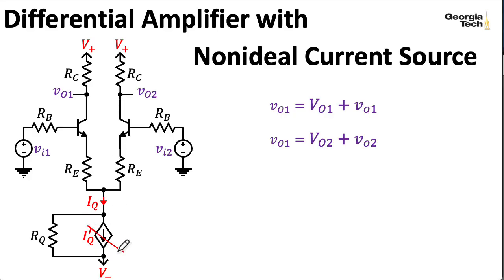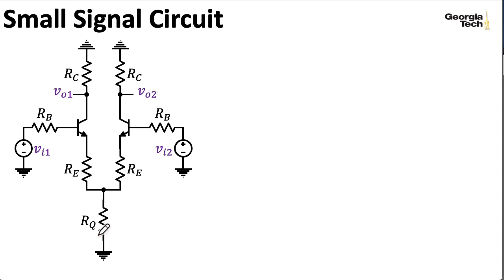Okay, let's look at the small signal circuit. I open up IQ prime, and I take all of my power supplies, and I turn them into AC ground. And so now I just have that RQ sitting there at the bottom of the circuit.